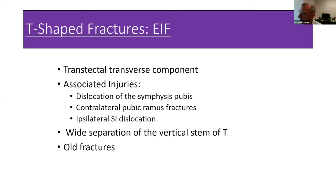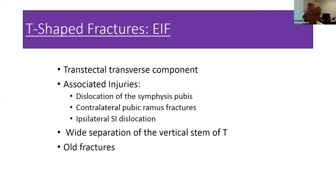For T-shaped fractures, the transtectal transverse component and wide displacement of the vertical stem of the T are indications, because you'll have difficulty controlling the opposite side through a single approach. Associated dislocations around the pelvic ring may also be an indication.